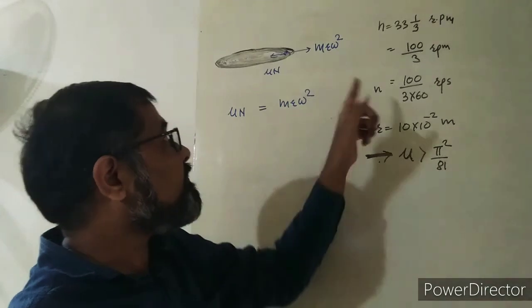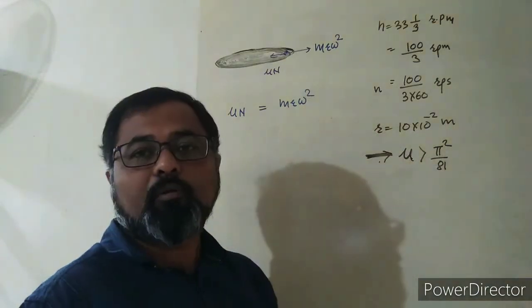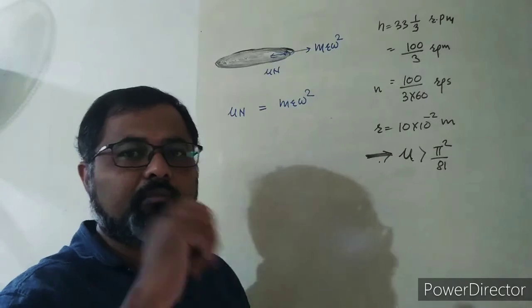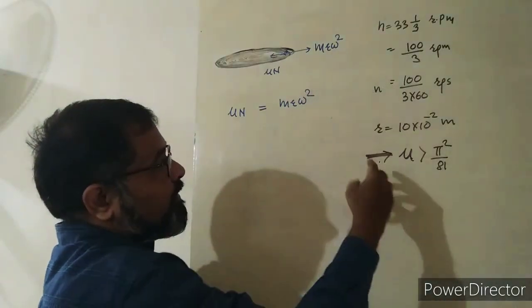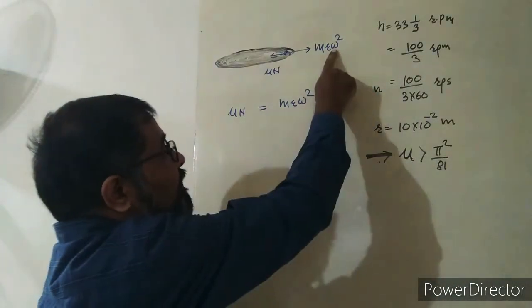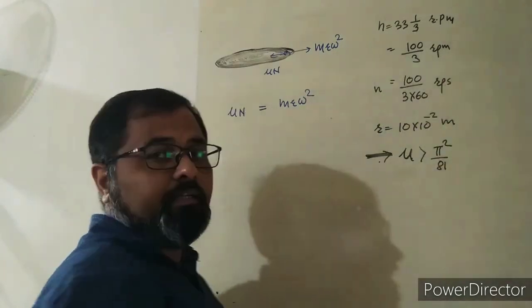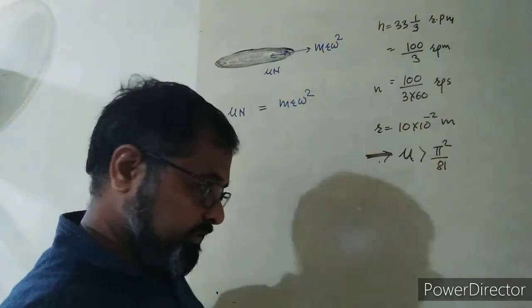If frequency is increased, meaning more revolutions per unit time, then omega increases. Since ω = 2πn, if omega increases, the outward force increases.